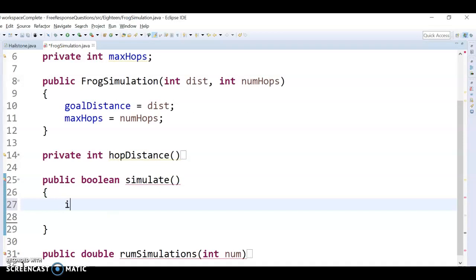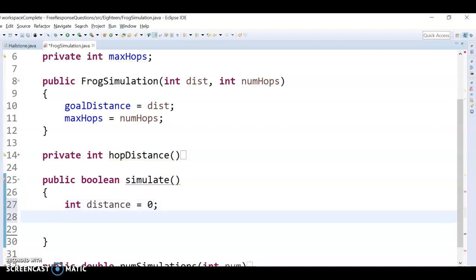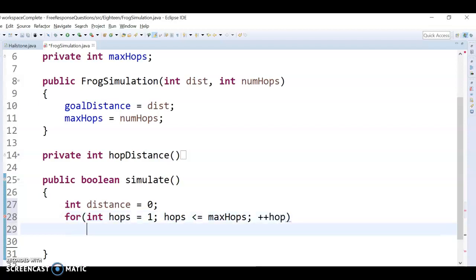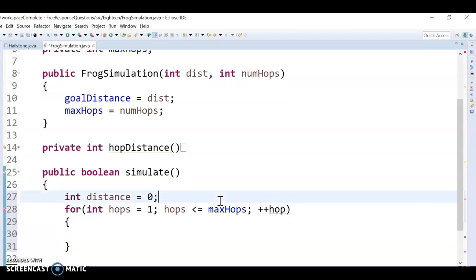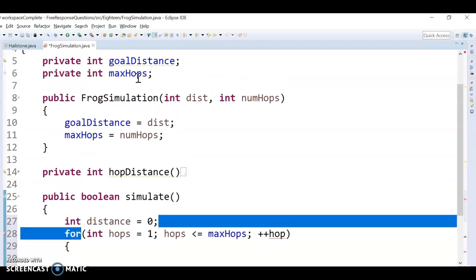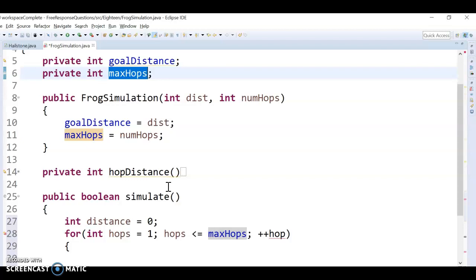One thing we do need to do is keep track of how far we've hopped. So I'm just going to make a distance variable that says we haven't hopped any distance at all at the start. And now I'm going to do my for loop. So I'm going to call it hops and say we start at one hop and our hops has to say less than or equal to the max hops, plus plus hop. So that's going to simulate hopping up to the number of max hops. And again, this max hops is just a variable that's globally accessible everywhere.